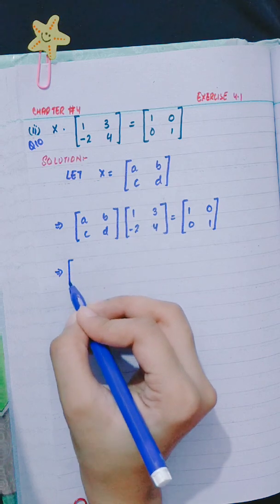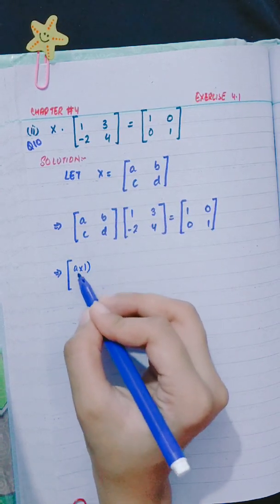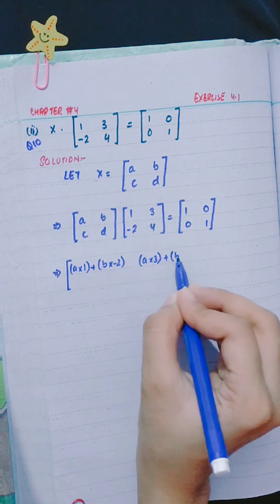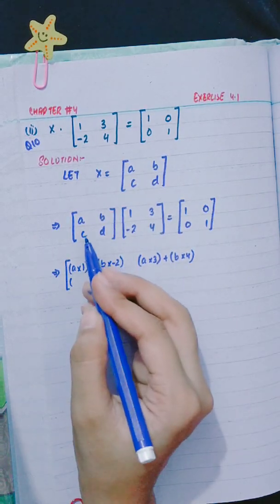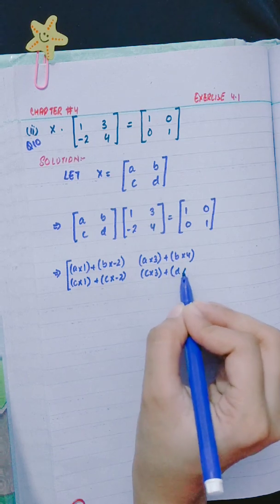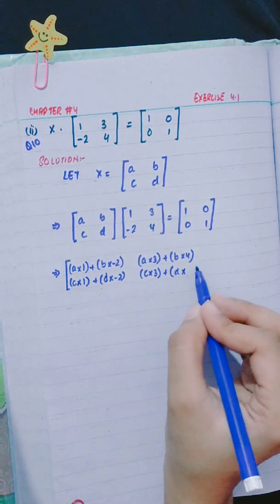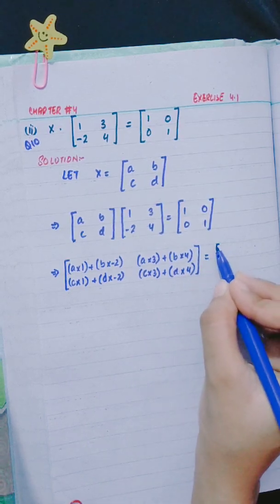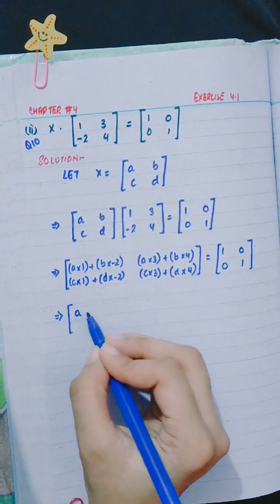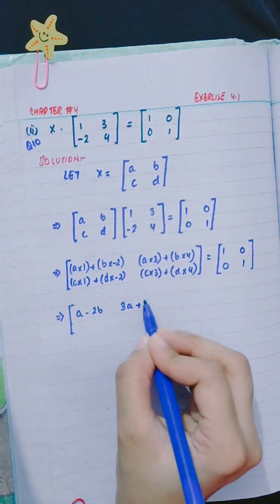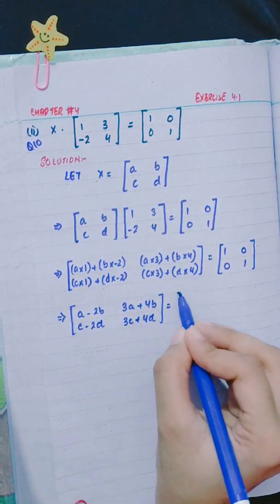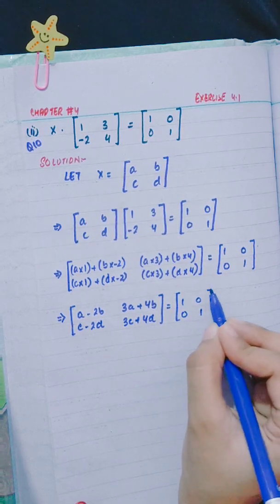Multiplying: a into 1 plus b into -2, a into 3 plus b into 4. Now this row: c into 1 plus d into -2, c into 3 plus d into 4. This equals [1, 0; 0, 1]. So we get [a - 2b, 3a + 4b; c - 2d, 3c + 4d] equals [1, 0; 0, 1].